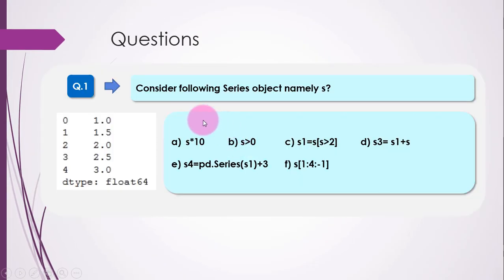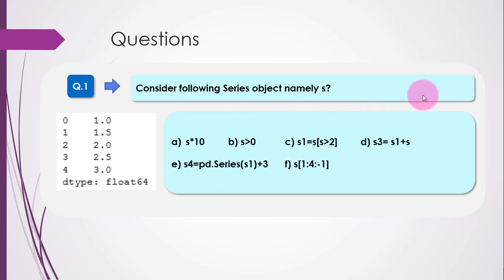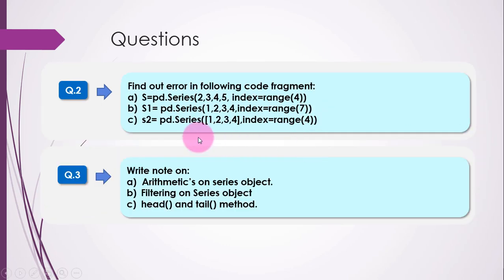Now let's move to the question section. Question 1: consider the following Series object and answer the six parts. Question 2: find errors in the following code fragments — five parts. Write short notes on: arithmetic on Series objects, filtering on Series objects, and head and tail methods. This concludes our topic. Hope you liked it, thank you very much.